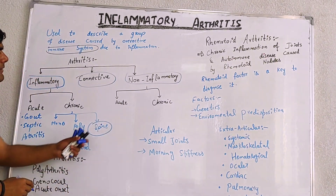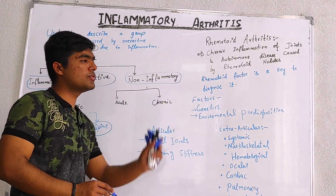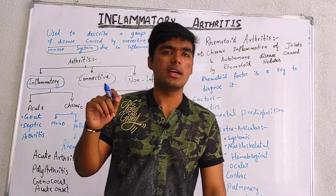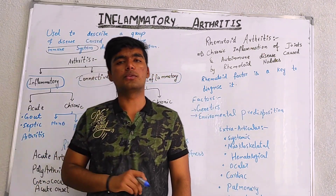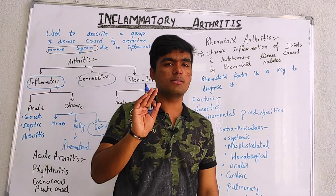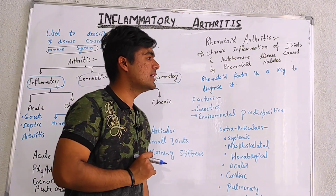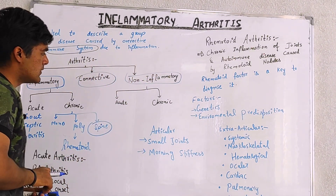In the same way, Non-Inflammatory is also divided into two types: Acute and Chronic. The same divisions apply for both Acute and Chronic — Mono, Poly, and Spine — and for Acute there are two further divisions.